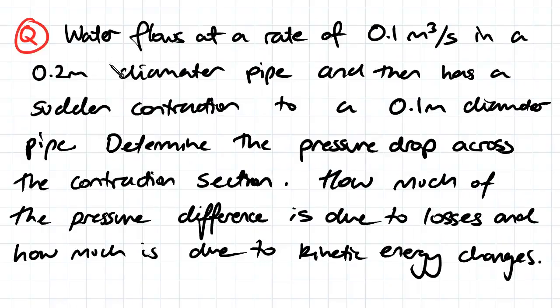So our question here, water flows at a flow rate of 0.1 meters cubed a second. It's from a 0.2 meter diameter pipe and there's a sudden contraction to a 0.1 meter diameter pipe. We need to determine the pressure drop across that contraction and then work out how much of the pressure difference is due to losses and how much is due to kinetic energy changes.